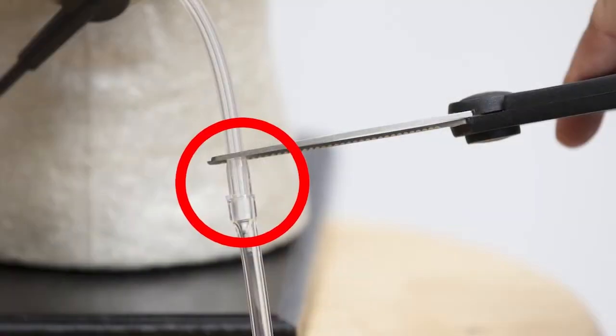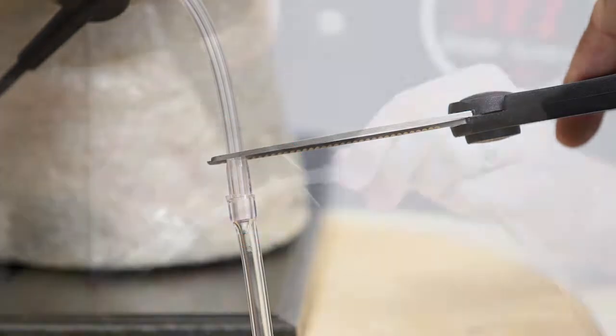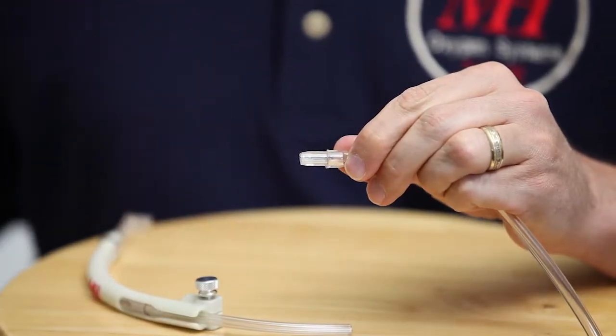Next, cut out the joint fitting in the tubing located about 2 inches down from the arm mount. Be sure to cut the tubing as close to the joint fitting as possible.